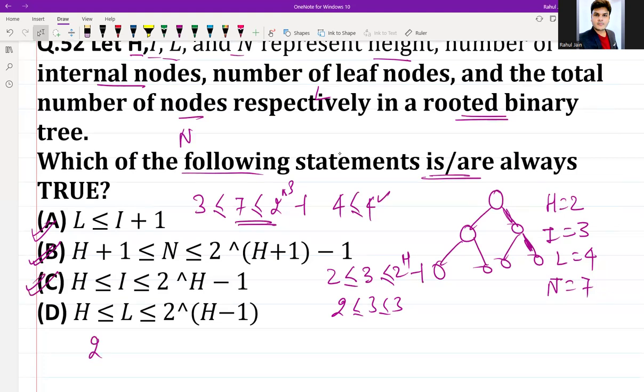Option D: H is less than or equal to L, and L is less than or equal to 2 to the power H minus 1. Height is 2, L is 4. But 2 to the power H minus 1, which is 2 to the power 1, equals 2. In that case, it is not mapped. So options A, B, C are the correct answers.